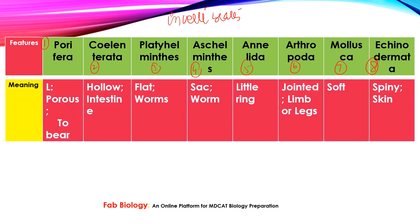Now the meanings: Porifera means 'pore bearer.' Coelenterata means 'hollow intestine.' Platyhelminthes means 'flatworm.' Aschelminthes means 'sac worm.' Annelida means 'little ring.' Arthropoda means 'jointed limbs or legs.' Mollusca means 'soft body animals.' Echinodermata — Echino means 'spines' and derma means 'skin.' So these are all the meanings.